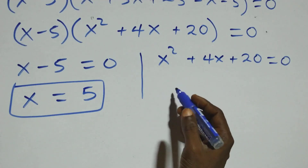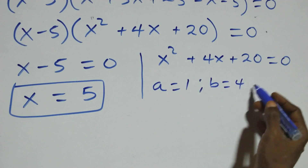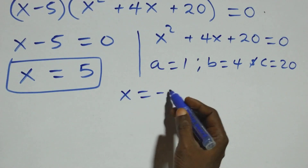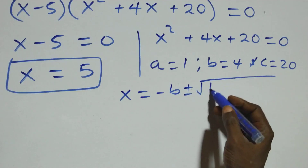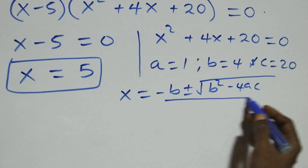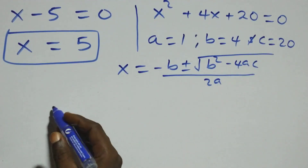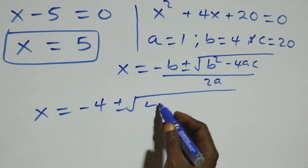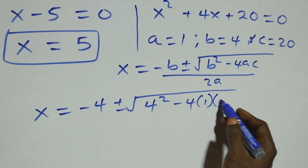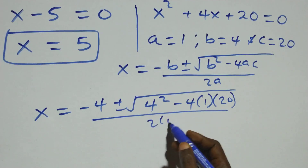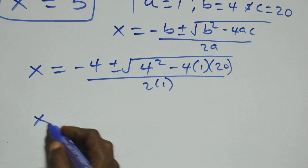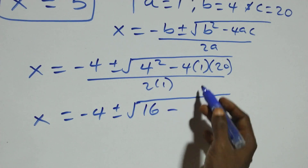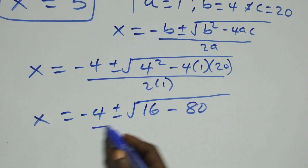Then here we have a quadratic equation where a equals 1, b equals 4, and c equals 20. Applying the quadratic formula: x equals minus b plus or minus square root of b squared minus 4ac, all over 2a. This becomes x equals minus 4 plus or minus square root of 4 squared minus 4 times 1 times 20, all over 2 times 1. That gives us x equals minus 4 plus or minus square root of 16 minus 80, all over 2.